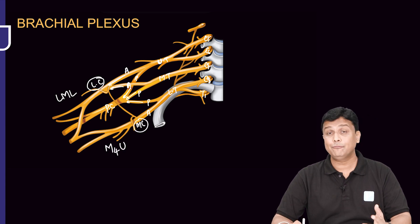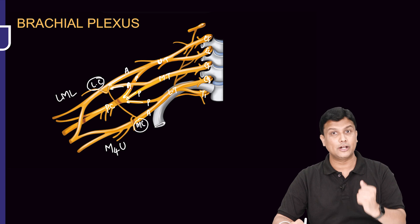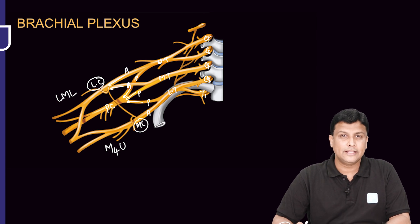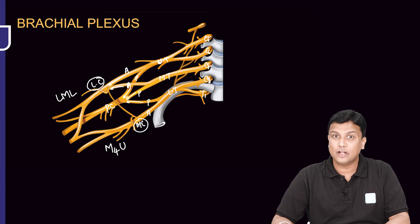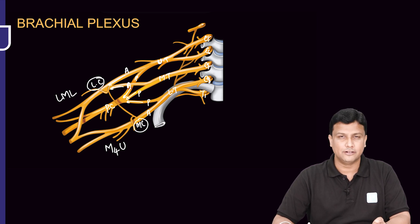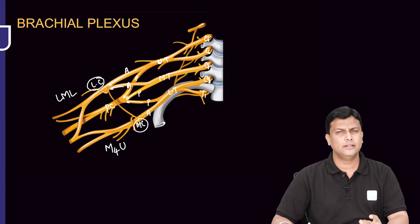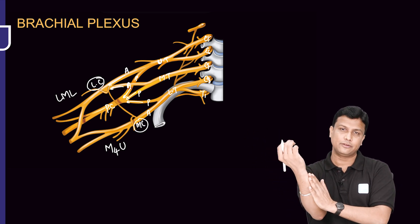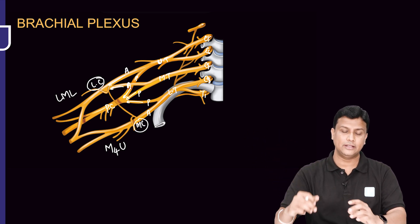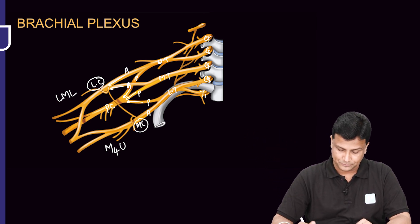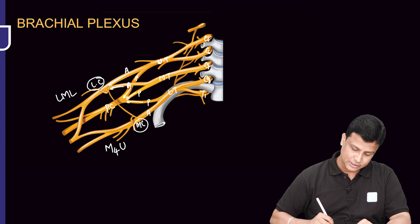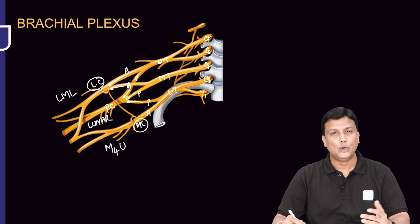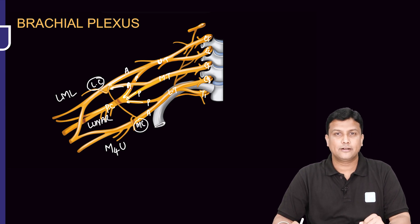The medial cord gives five branches, remembered with the mnemonic M4U: M for medial pectoral nerve, M for medial root of median nerve, medial cutaneous nerve of the arm, medial cutaneous nerve of the forearm, and U for ulnar nerve.